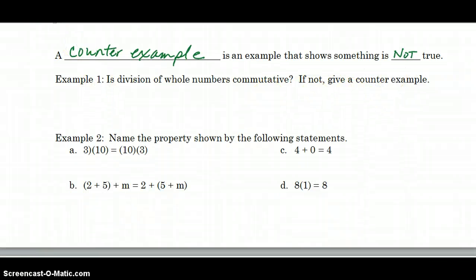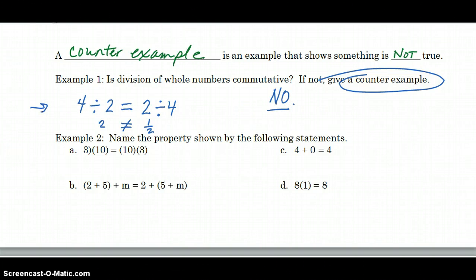I'm going to pick two whole numbers. Let's make it easy: 4 divided by 2. 4 divided by 2 is 2. The commutative property says I should be able to say 2 divided by 4. Is that statement true? Well, 4 divided by 2 is 2, and 2 divided by 4 is 1 half. So those are not equal. Since they are not equal, this is my counterexample. So the answer is no, and here is my counterexample.